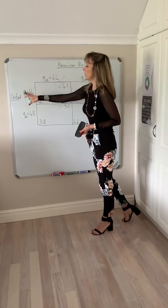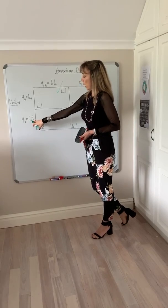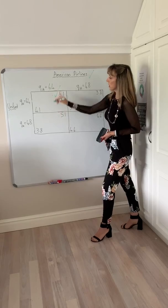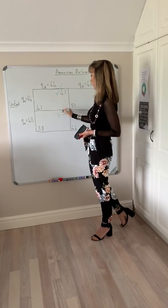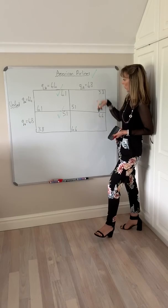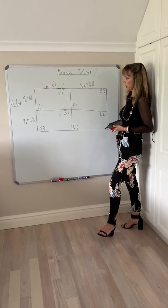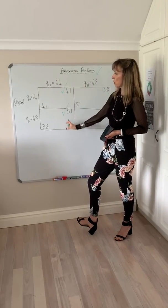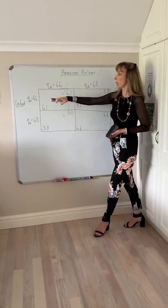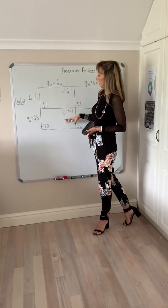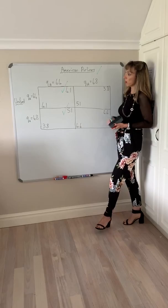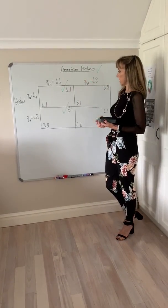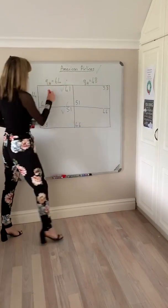Likewise, if United Airlines follows a low output strategy, American Airlines' best response is once again to follow a high output and earn 5.1, as opposed to 4.6 under the lower output strategy. So we find that American Airlines has a dominant strategy to produce a higher output. Regardless of what this airline does, we can find that its best profit-maximizing response is the higher output. You can write that down — American Airlines has a dominant strategy of a higher output.